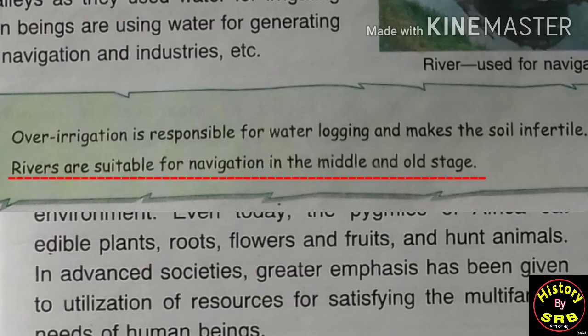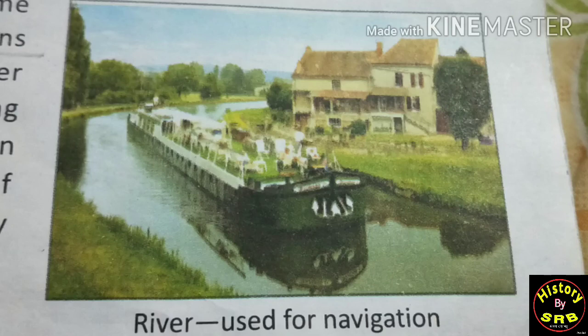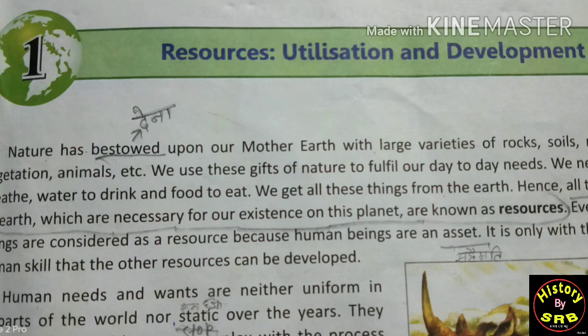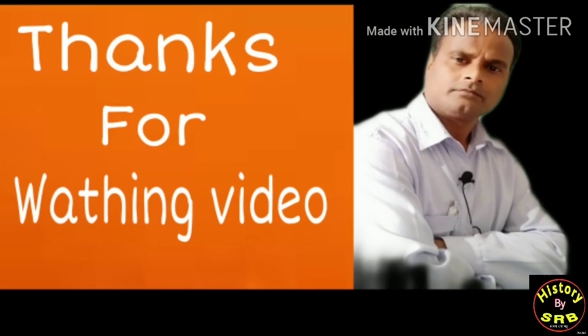Now the second point given in the Do You Know section: Rivers are suitable for navigation in the middle and lower course. Navigation — the work of running boats — requires certain conditions. Where rivers have a middle and lower course, meaning flat land where water flow is not very rapid, navigation can be done. So this is the first page. In the second page we will discuss utilization of resources, which you can see in the next video. Wish you all the best and have a nice day.